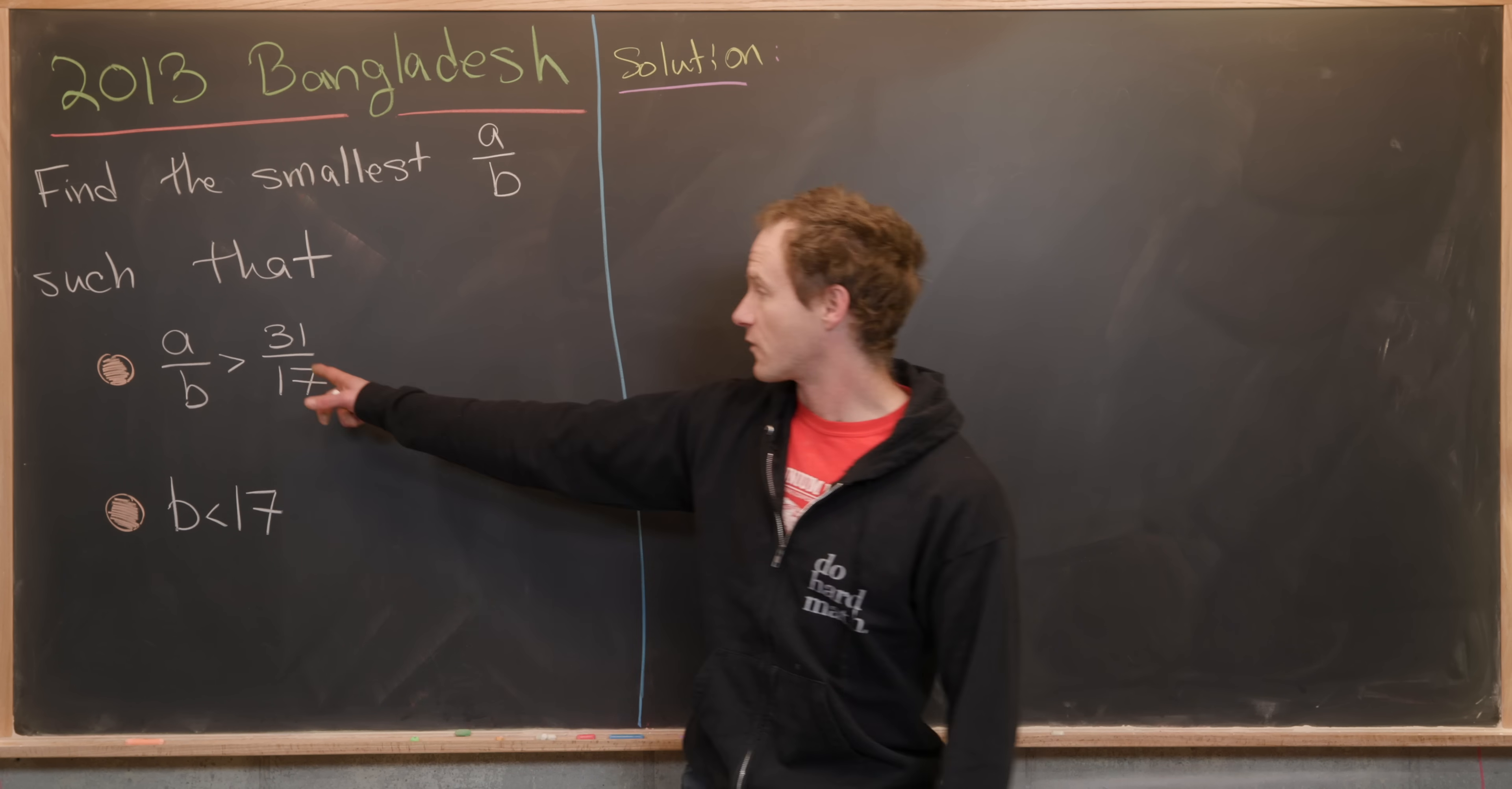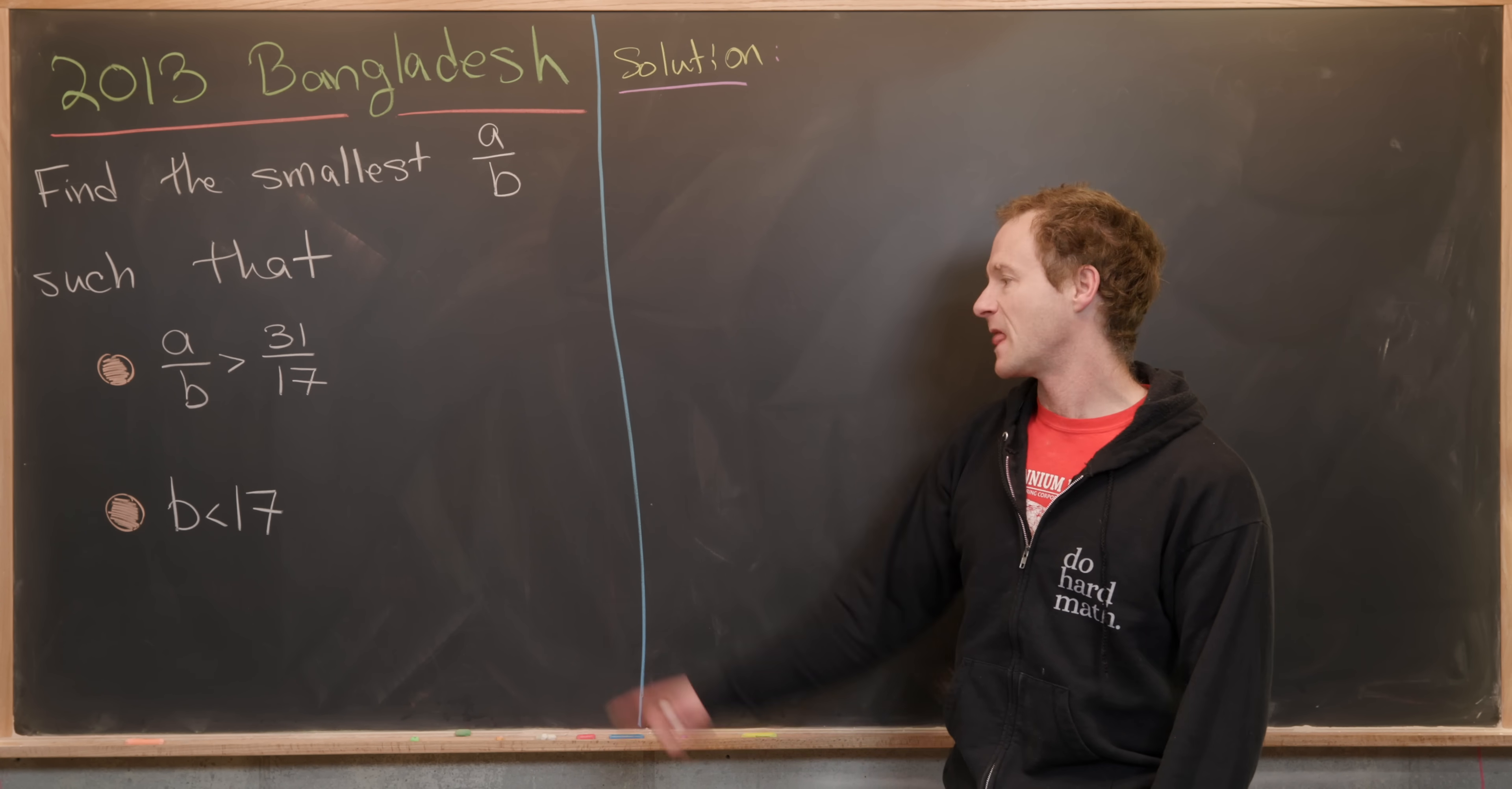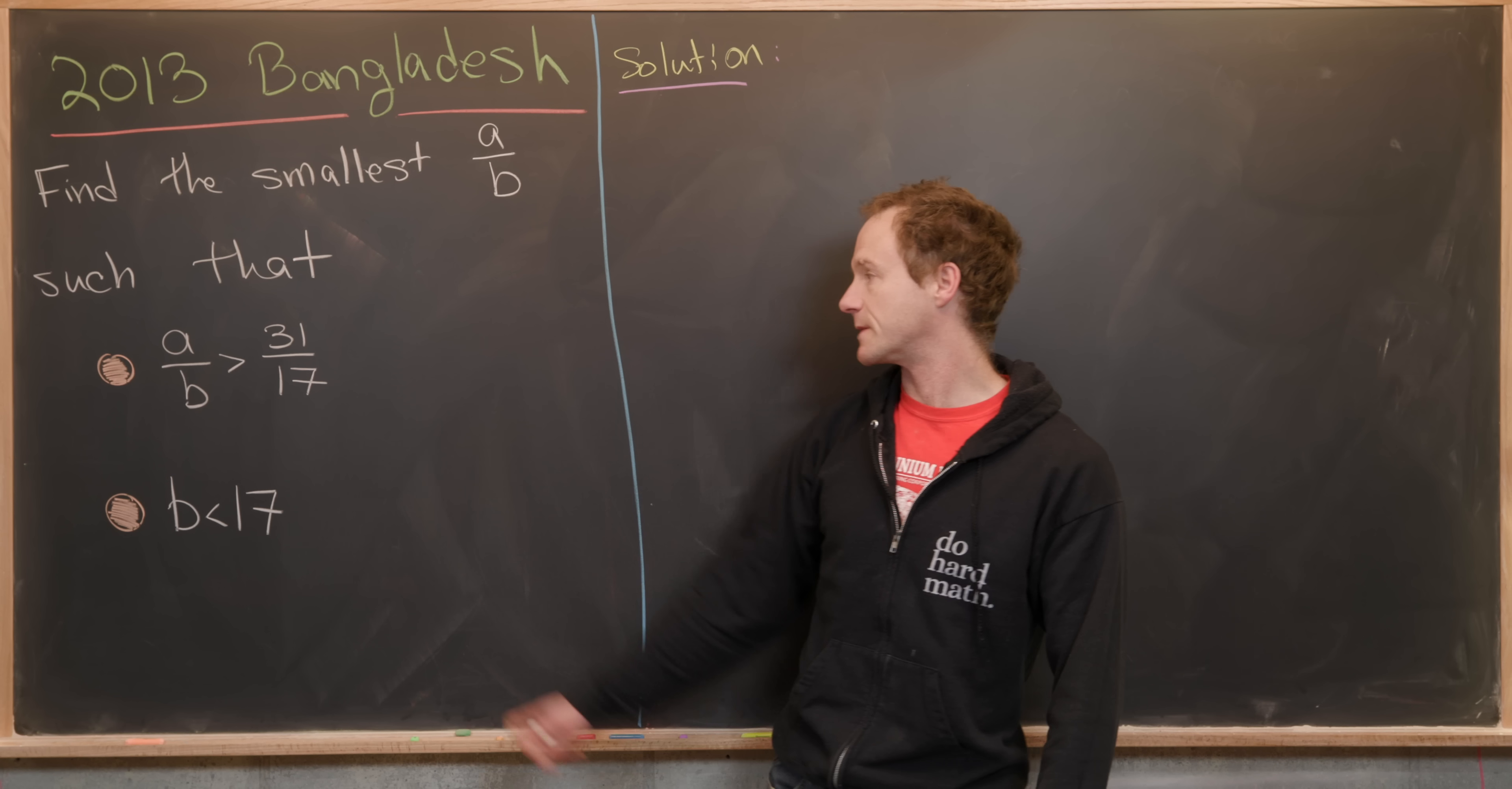Such that A over B is bigger than 31 over 17, and B is smaller than 17. Let's get to it.